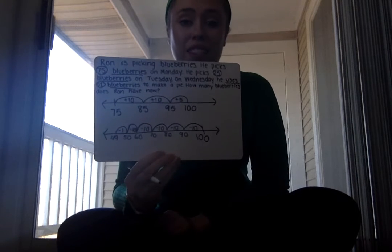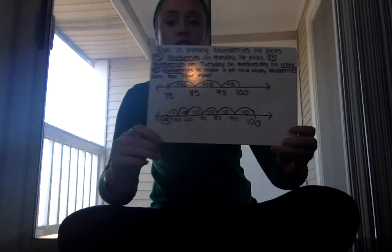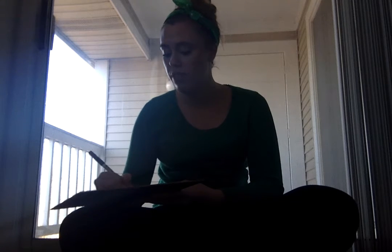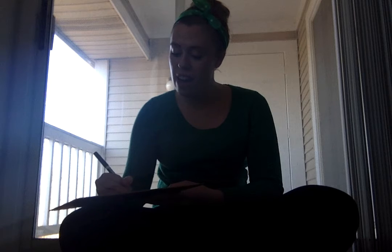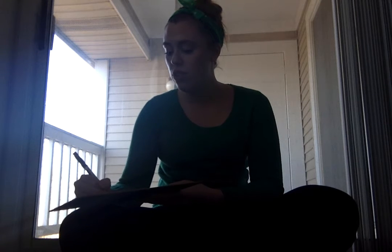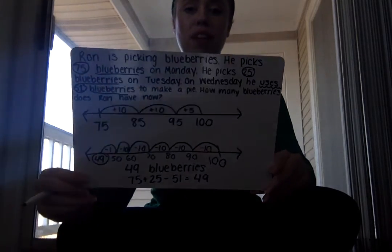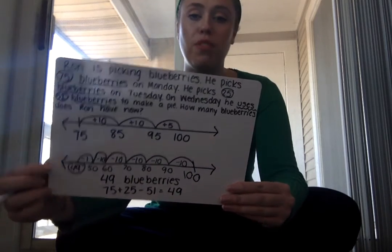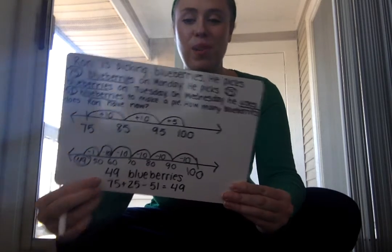This was a different method but got me to the exact same answer of 49 blueberries. Again I include my answer with a label — 49 blueberries — and my equation is the same: I started with 75, added 25, then took away 51 to get 49. This is method number two: open number lines. We have the work on top, the answer with a label, and then the equation.